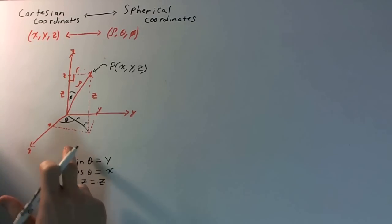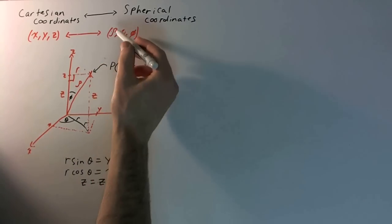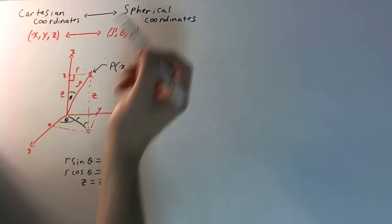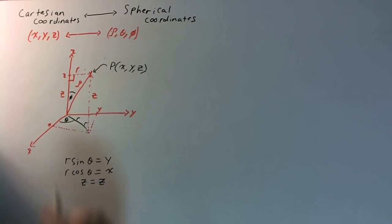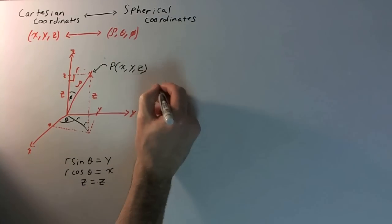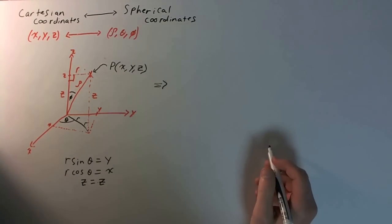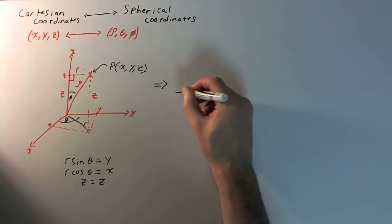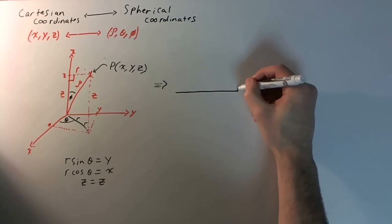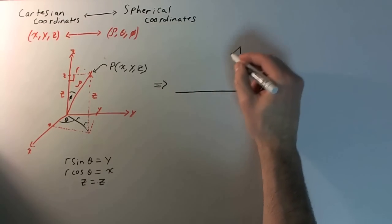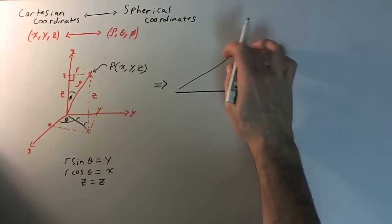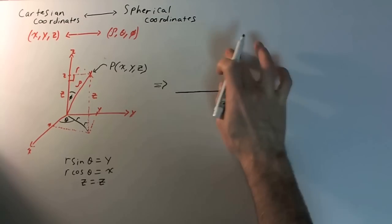We have r defined, we know theta. But the problem is, we need to know rho, and we need phi. So let's take this triangle here and expand it and see what we can find.